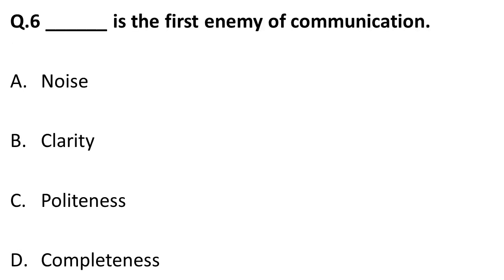The next question: blank is the first enemy of communication. Clarity, politeness, and completeness are good for communication, but noise is the first enemy of communication. Noise is also a form of distortion and distraction.